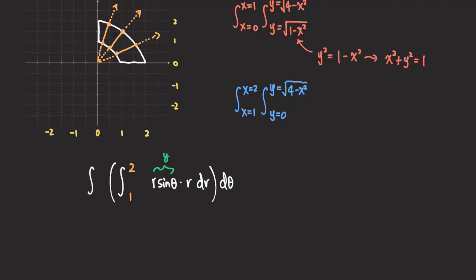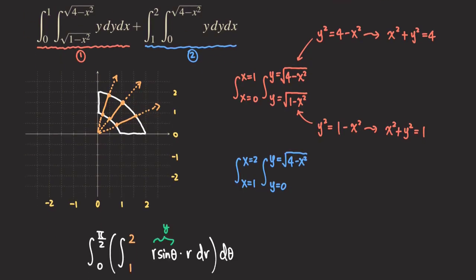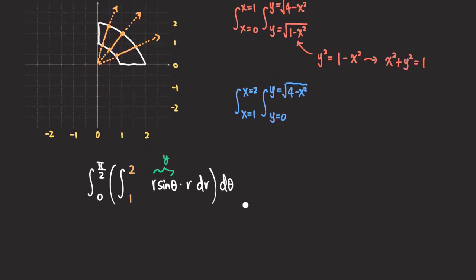For the limits of theta, we look at the region of integration. It starts at the positive X-axis, where theta equals zero, and goes all the way to the positive Y-axis, where theta equals pi over two. So now we have the full iterated integral. This form is easier to evaluate than the original sum, but we are not doing the calculation here — I just wanted to show the idea for how to convert that sum into a polar integral. That's it for this problem. Thank you for watching, please share and subscribe. I will see you next time.